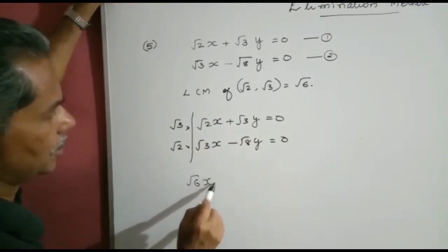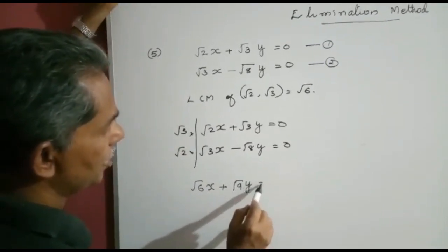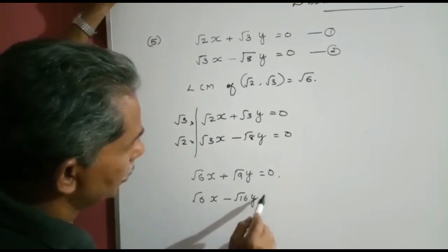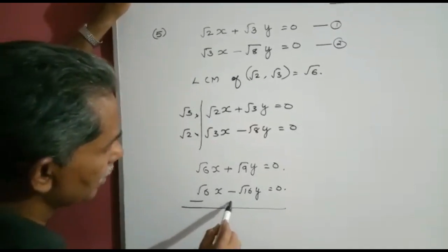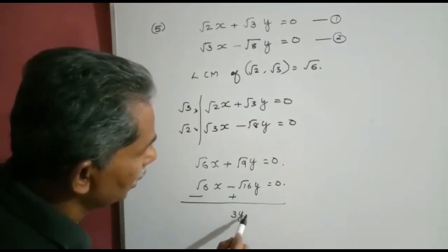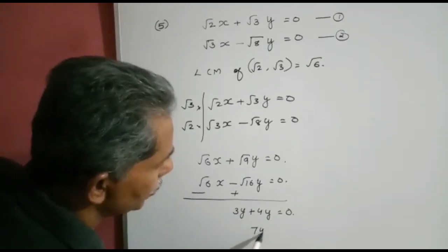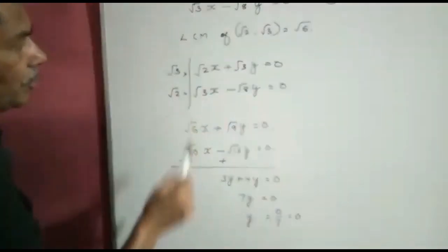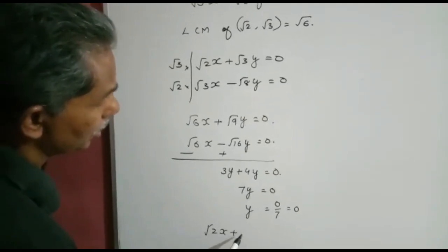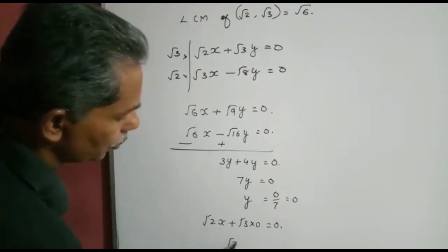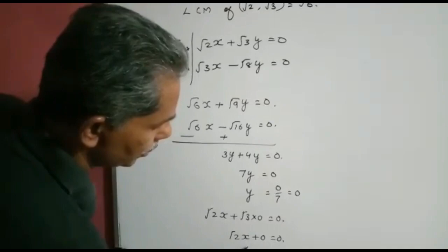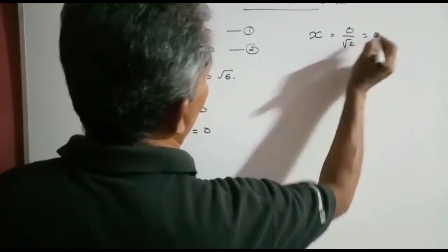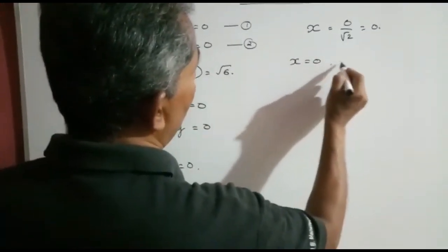This gives root 6 x plus root 9 y equals 0, and root 6 x minus root 16 y equals 0. Subtracting and canceling x: root 9 is 3, so 3y plus 4y equals 0, giving 7y equals 0, therefore y equals 0. Substituting y equals 0 into the first equation: root 2 x plus root 3 times 0 equals 0, so root 2 x equals 0, giving x equals 0. Thus x equals 0 and y equals 0.